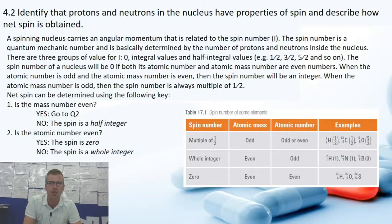So a spinning nucleus carries an angular momentum that is related to spin number. The spin number is a quantum mechanical number and is basically determined by the number of protons and neutrons inside the nucleus.